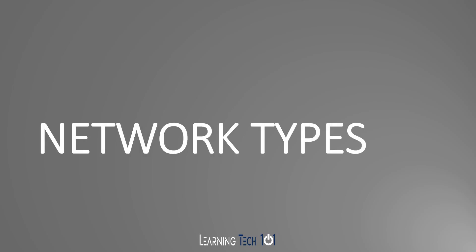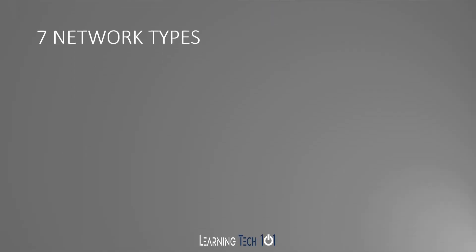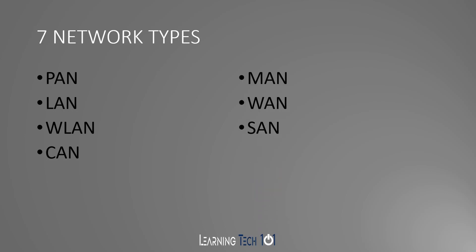Welcome to Learning Tech 101. My name is Renique and today we're going to talk about network types. There are seven network types: personal area network, local area network, wireless local area network, campus area network, metropolitan area network, wide area network, and storage area network.